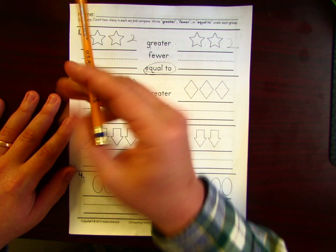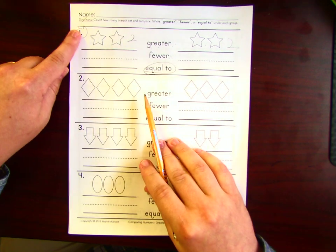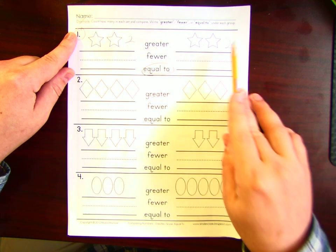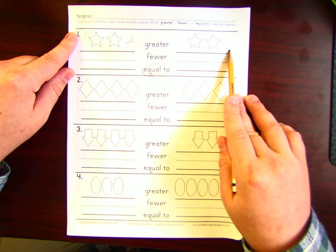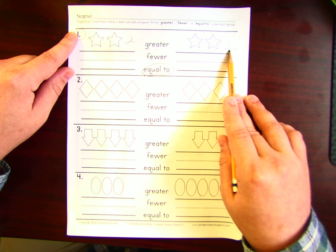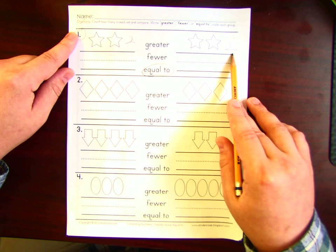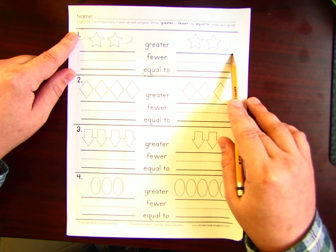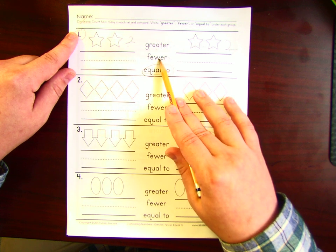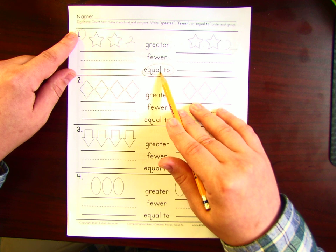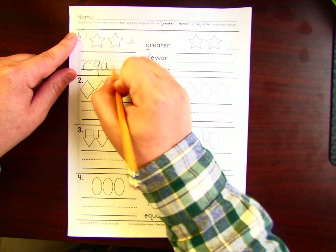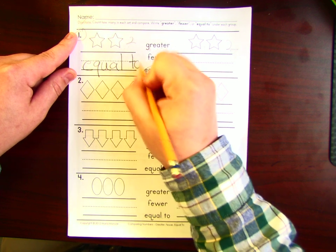Alright, so we have a number one. So put your finger on number one. We have two numbers, two and two. The first question we need to ask ourselves, are they the same? Yes, they are. So let's look and try to find a math vocabulary word that tells us that they are the same. Is one of them greater? No. Is one of them fewer? No. Are they equal to each other? Yes. So you will write equal to in each space.